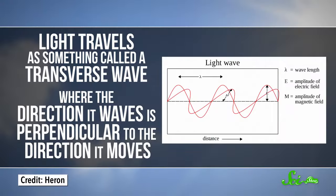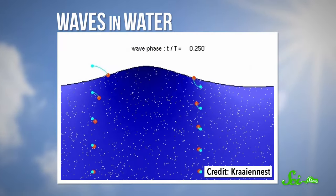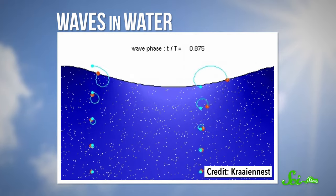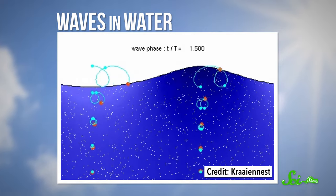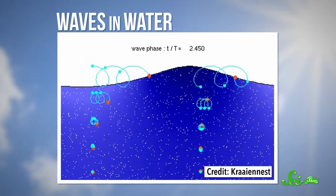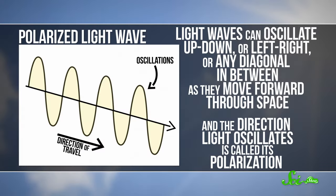So here's how polarized lenses actually reduce glare, and where we were wrong. Light travels as something called a transverse wave, where the direction it waves is perpendicular to the direction it moves. It's like how water waves — which are also transverse until they reach shore — move across the water. The wave moves forward across the surface, but the water itself just bobs up and down. Similarly, light waves can oscillate up and down, or left and right, or any diagonal in between as they move forward through space. The direction light oscillates is called its polarization.